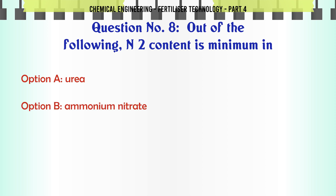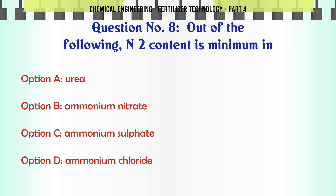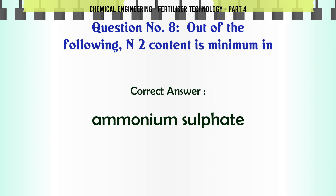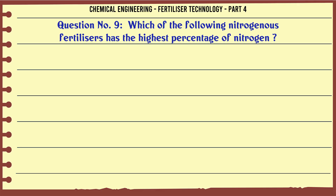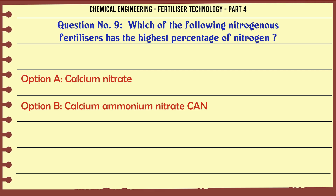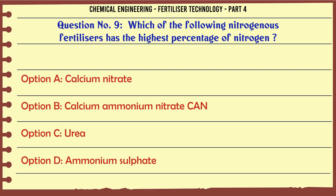Out of the following, N2 content is minimum in: a. urea, b. ammonium nitrate, c. ammonium sulfate, d. ammonium chloride. The correct answer is: ammonium sulfate.